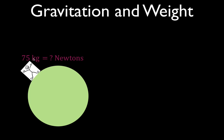The most common way to figure out the weight of an object near the surface of a planet — in this case, Earth — is to use Newton's second law: force equals mass times acceleration. When we calculate weight, we rewrite it as the force of gravity equals mass times g. G is the acceleration due to gravity on Earth, as opposed to 'a,' which is the general symbol for all kinds of acceleration.